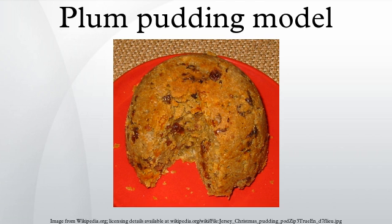Thompson's model was compared to a British dessert called plum pudding, hence the name. Thompson's paper was published in the March 1904 edition of the Philosophical Magazine, the leading British science journal of the day. In Thompson's view, the atoms of the elements consist of a number of negatively electrified corpuscles enclosed in a sphere of uniform positive electrification.